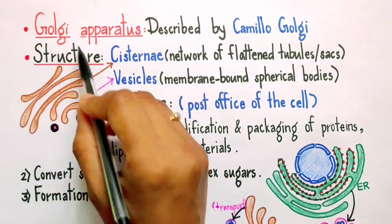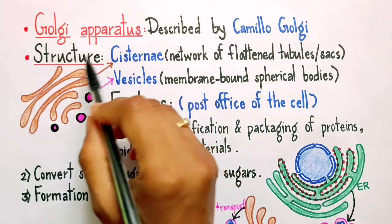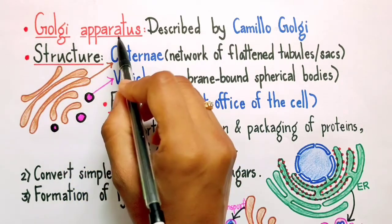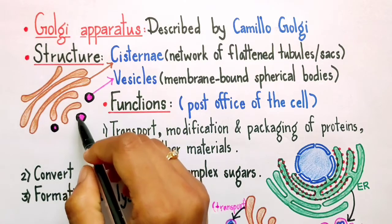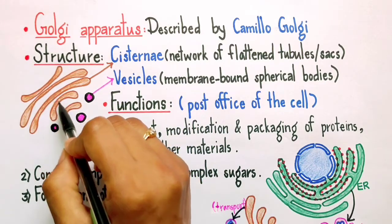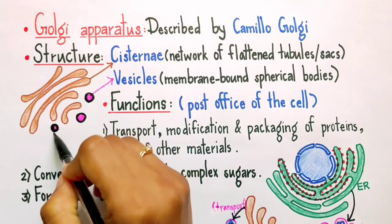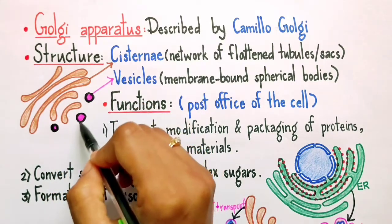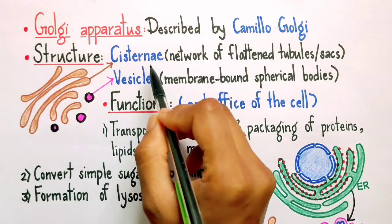Coming to the structure of Golgi apparatus. Golgi apparatus basically has two important components, namely cisternae which I have shown in brown color and vesicles which I have shown in pink colors. Now, what are the cisternae?